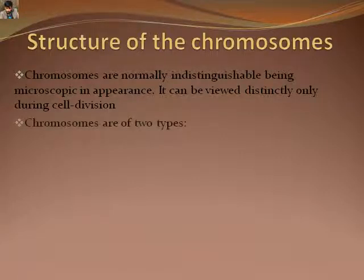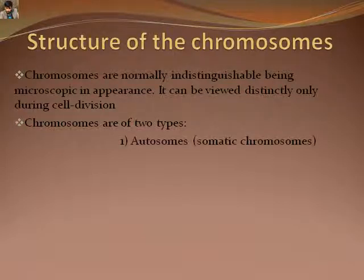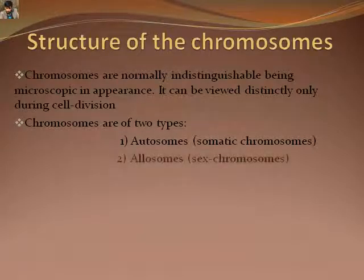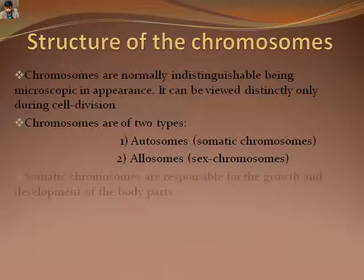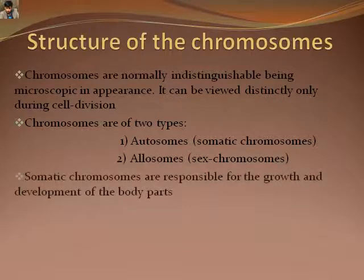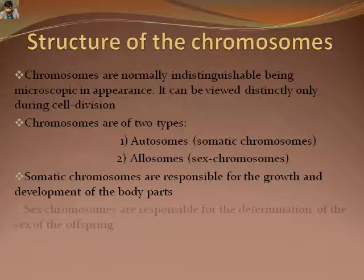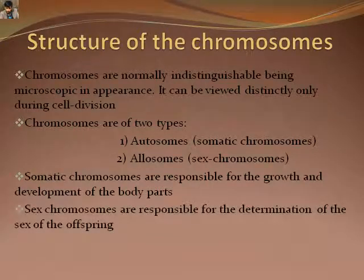Autosomes and allosomes are the two types of chromosomes. Autosomes are the chromosomes for growth and development of the body, whereas allosomes determine the sex of the offspring and perform sex-specific functions. Male gametes or female gametes have only half the number of chromosomes. After the fusion of male and female sex cells, a zygote with the full number of chromosomes is formed.